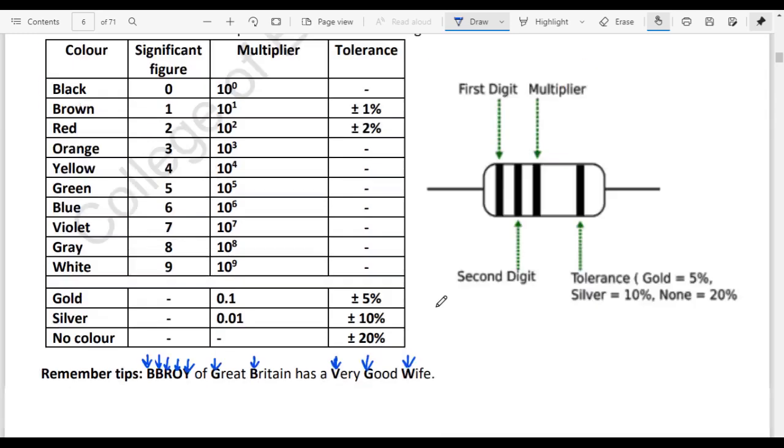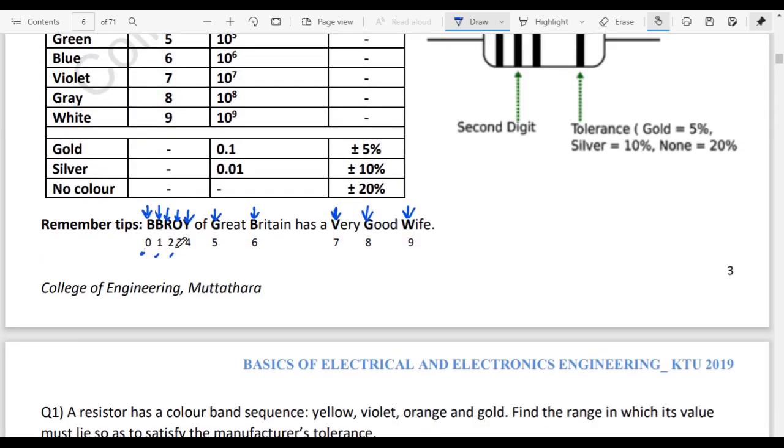Black means 0, brown 1, red 2, orange 3, yellow 4, green 5, blue 6, violet 7, grey 8, white 9.